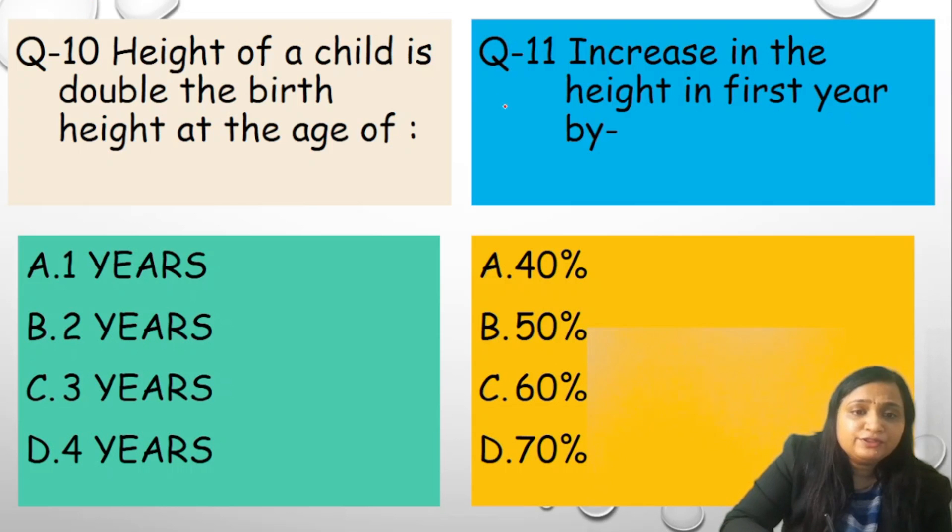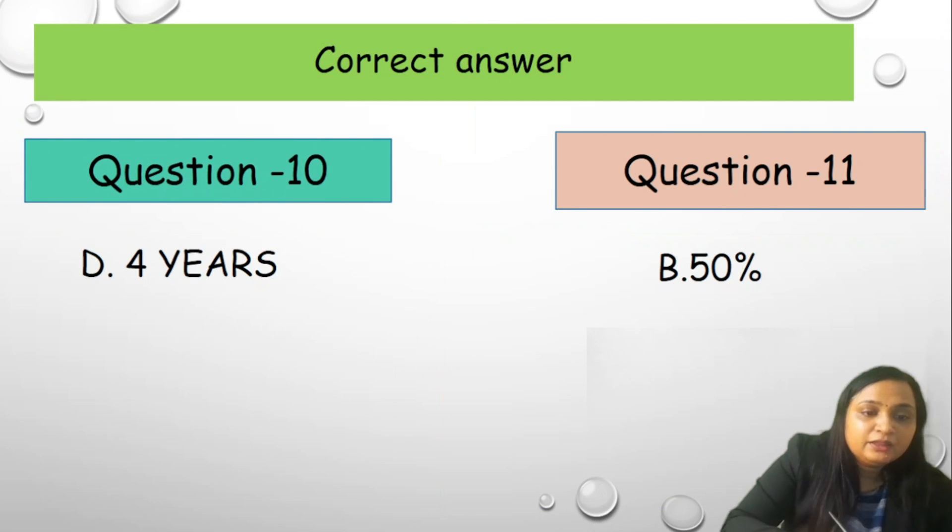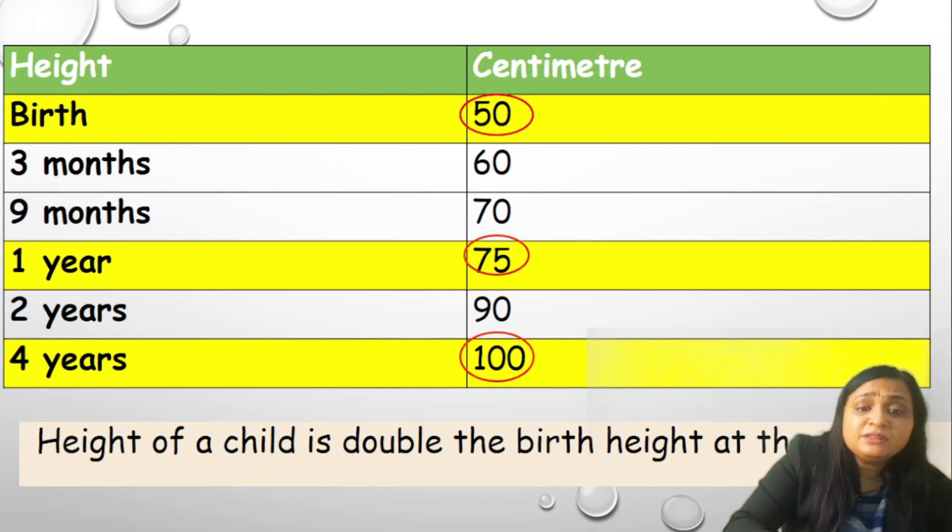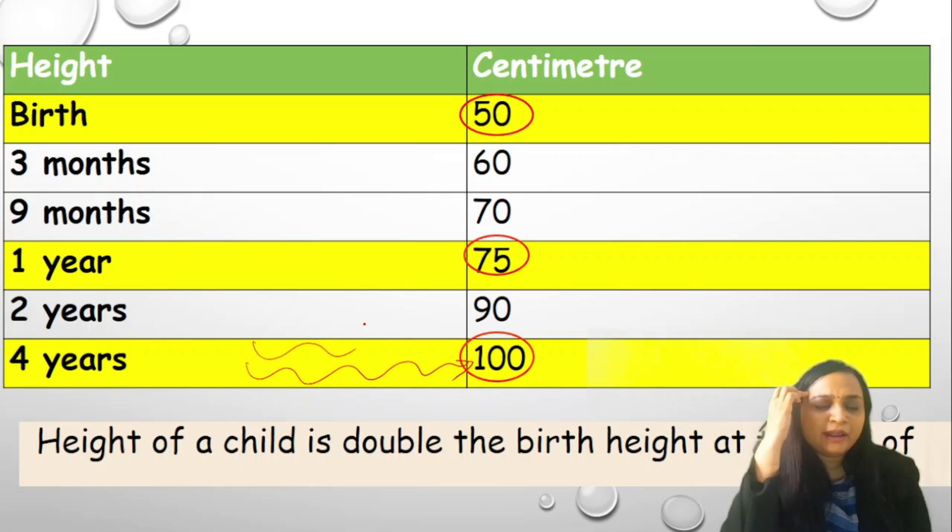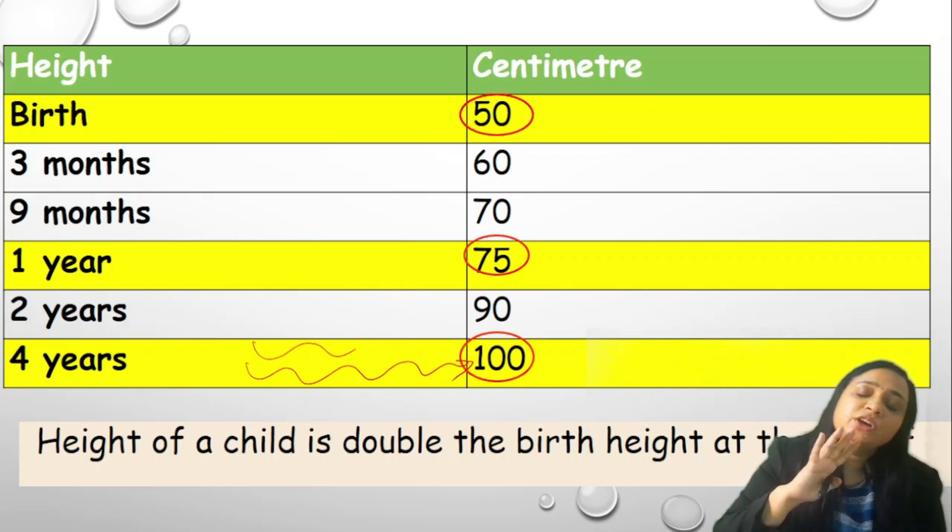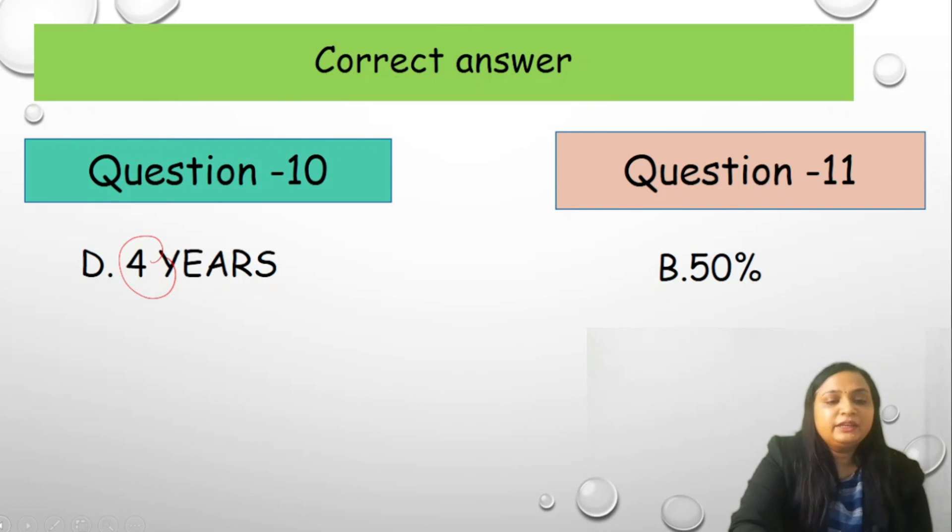Question number 10. Height of a child is double the birth height at the age of - your options are A 1 year, B 2 years, C 3 years or D 4 years. The correct answer is 4 years. I have told almost 5 times in this lecture that at 4 years it is century for the child. At 4 years store somewhere in your brain. At 4 years of the age 100 cm height. Correct answer is option D 4 years.